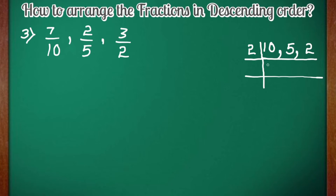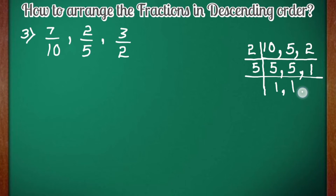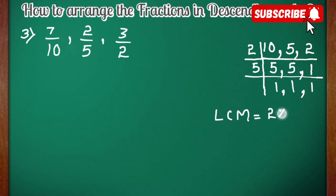Dividing by 2: 10 divided by 2 is 5, 5 cannot be divided by 2 so we write it as it is, and 2 divided by 2 is 1. Now 2 is completely divided. Next, 5 remains, so we divide by 5: 5 divided by 5 is 1. Now all denominators are completely divided. To get the LCM we multiply the factors used: 2 times 5 equals 10. So the LCM is 10.